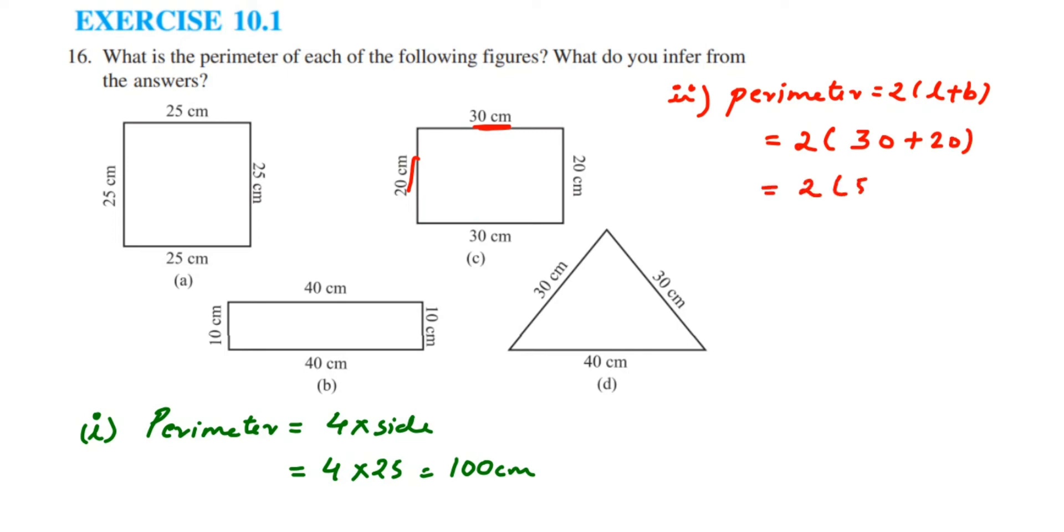The third one is also a rectangle, so perimeter equals 2 times (L plus B). That's 2 times (40 plus 10), which equals 2 times 50, which equals 100 centimeters again.